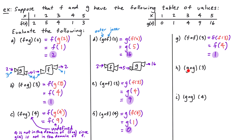In example h we have g composed with g of 3. This time g is both the inner and outer function, so this is g of g of 3. We take 3, plug it into g first, then take that output and plug it into g again. Starting with g of 3: looking at the table for g, when the input is 3 the output is 4. So g of 3 is equal to 4. Now we plug that into g: when the input is 4, the output is 9. So g of 4 is equal to 9, which means g composed with g of 3 is 9.